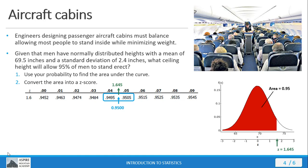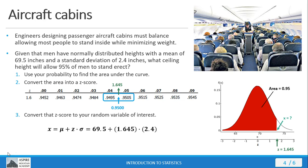Now we need the corresponding random variable value. Using the z-score equation solved for x — x = μ + z·σ — we plug in our numbers and find that x = 73.4 inches. So we can work these problems both ways: finding probability given a value, or finding the value given a probability.